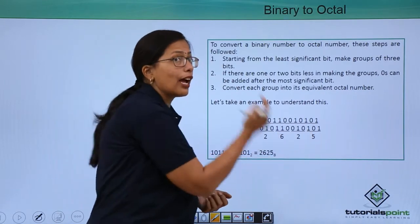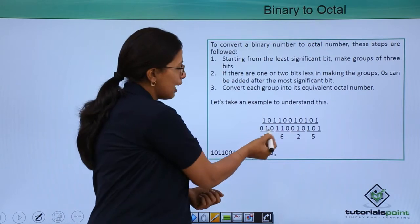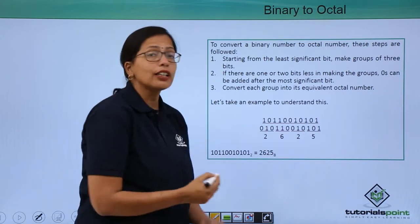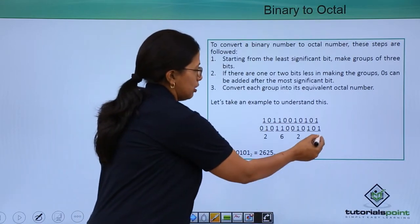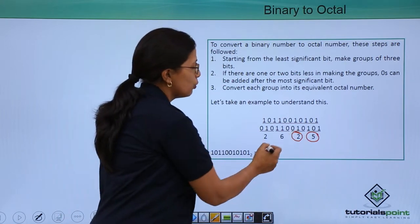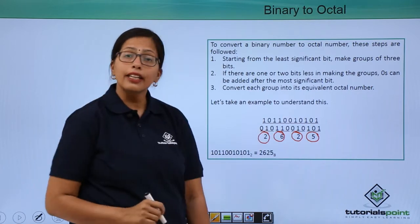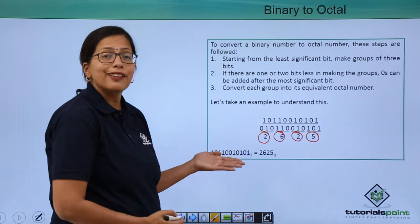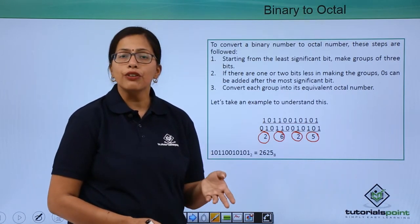So here, I have 101 as one group, 010 as the second group. Similarly, I have made 4 groups. Now, I will take each group and convert it into equivalent octal number, which is equivalent to 5. This will be 2. This is 6 and this is again 2. So what I will get is this binary number is equivalent to 2625 to the base of 8.